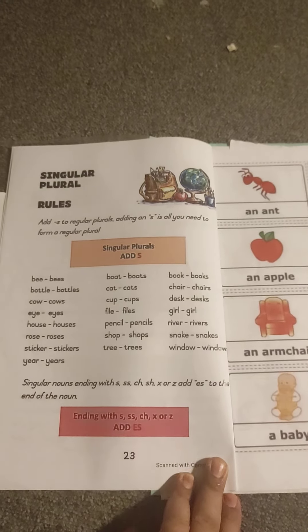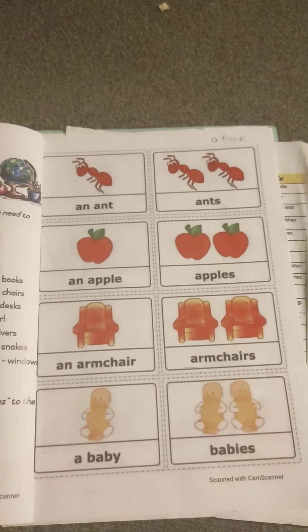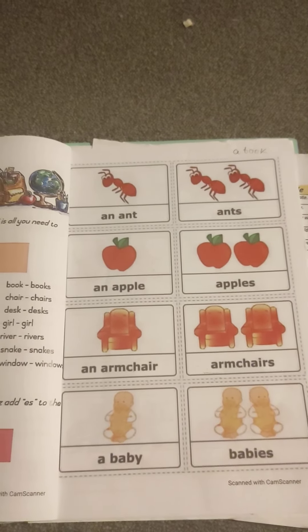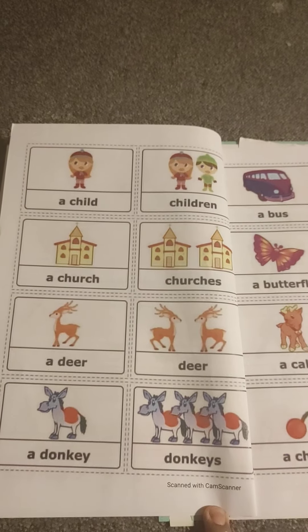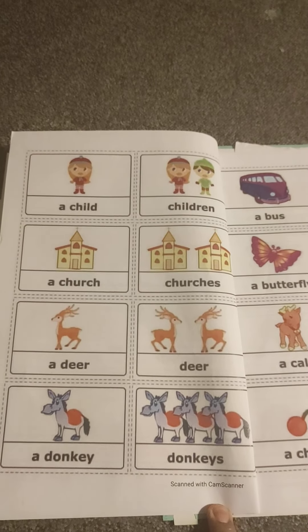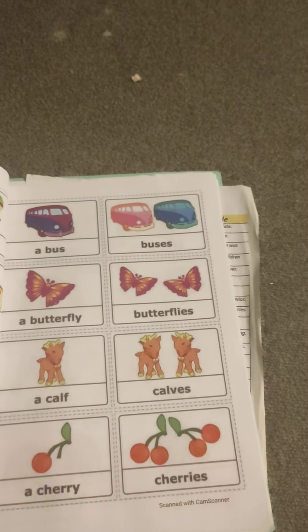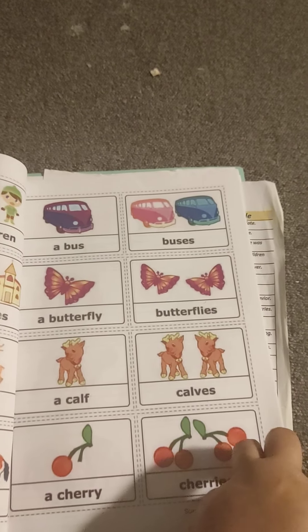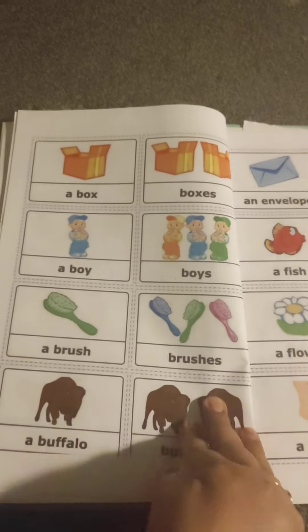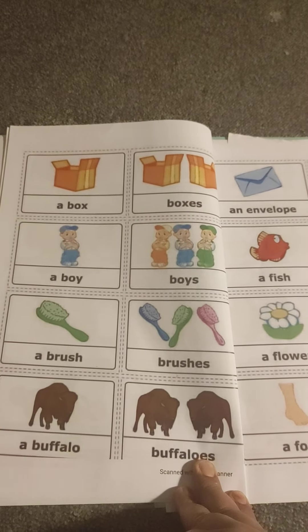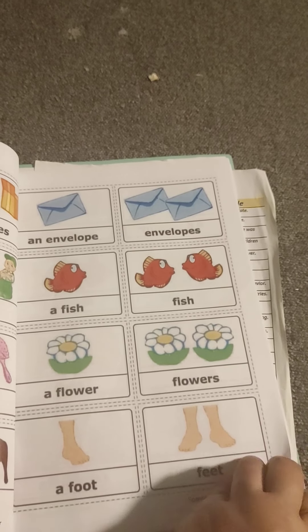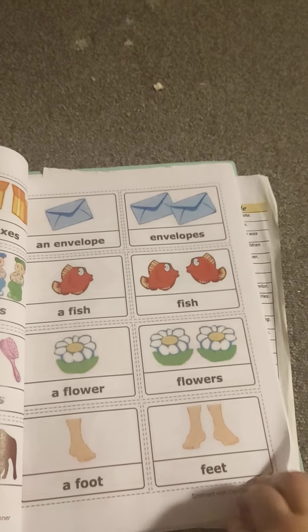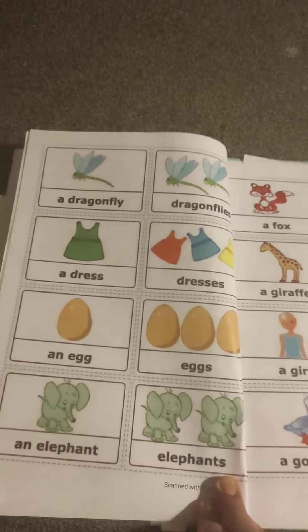When a singular noun ends with S, double-S, CH, SH, X, or Z, add ES to the end. For example: ant, ants; apple, apples; armchair, armchairs; baby, babies; child, children; church, churches; deer, deer; donkey, donkeys; bus, buses; butterfly, butterflies; calf, calves; cherry, cherries; box, boxes; boy, boys; brush, brushes; envelope, envelopes; fish, fish; flower, flowers; foot, feet; dragonfly, dragonflies.